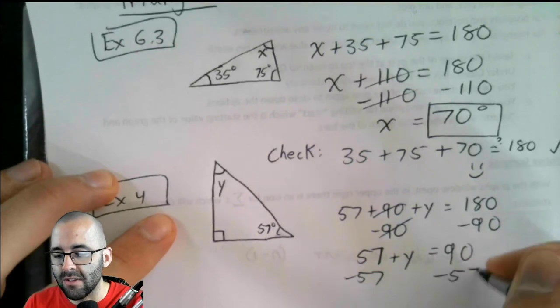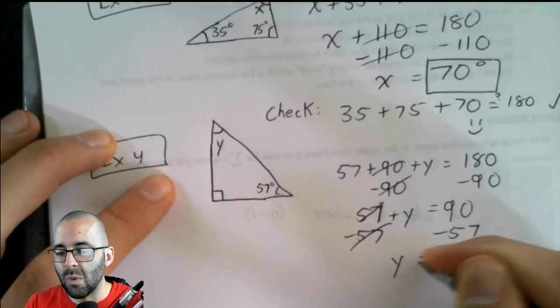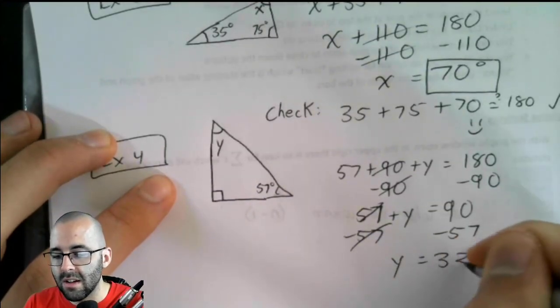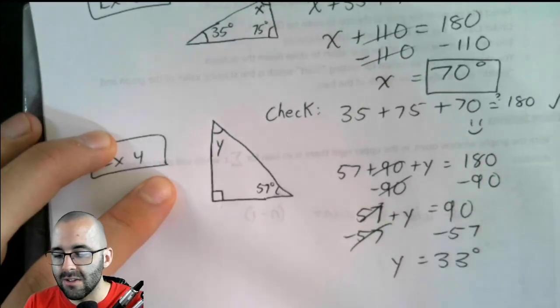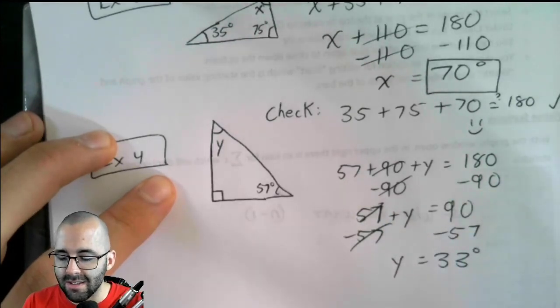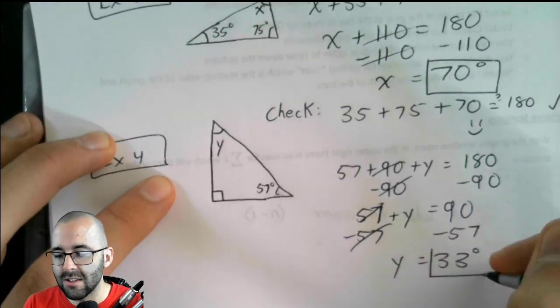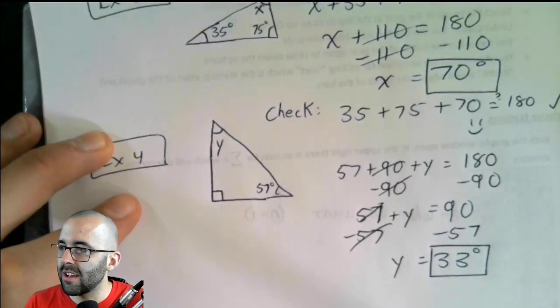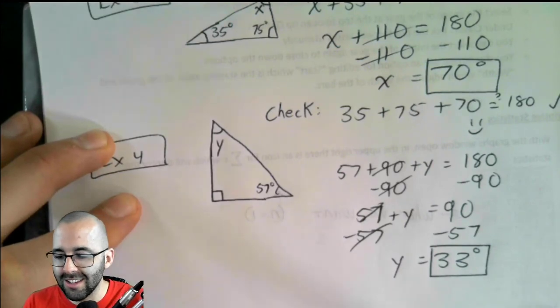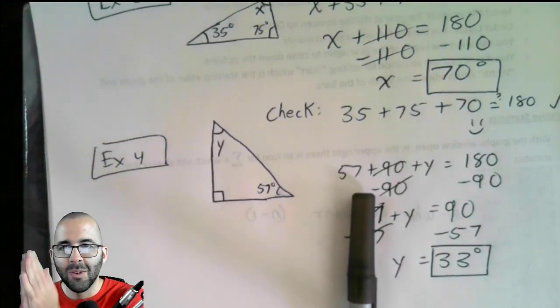So, subtract 57. Subtract 57. We're going to get Y equals 33. Again, you don't have to do this in your head. You can use a calculator. But, I'm too impatient to use a calculator. And, I've done a lot of math. So, the answer, the third angle is 33 degrees. We are done.